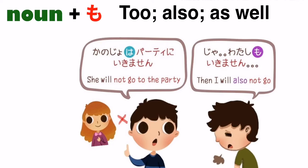Kanonju wa party ni ikimasen. She will not go to the party. Ja, watashi mo ikimasen. Then I will also not go.